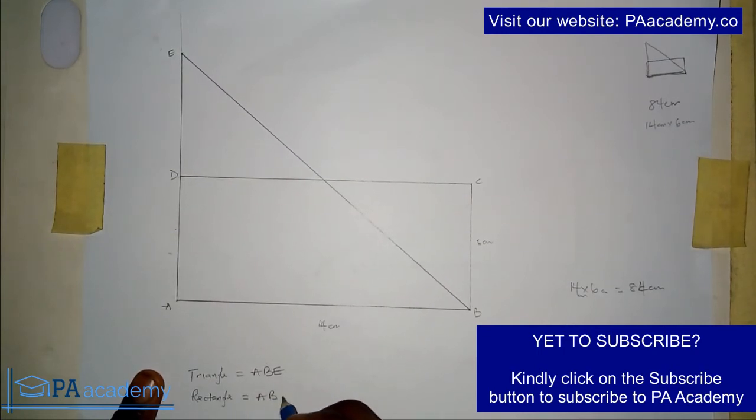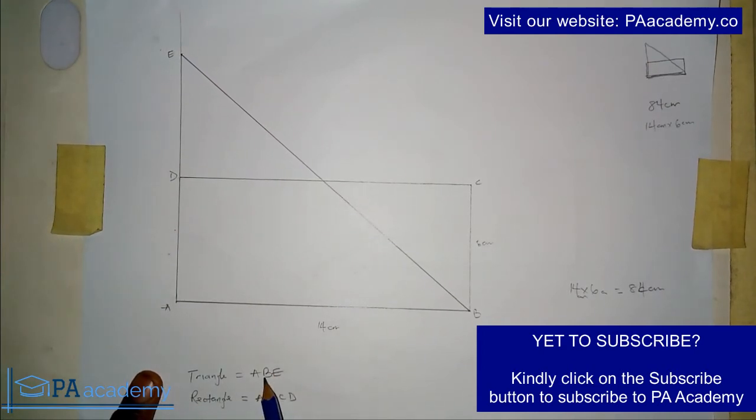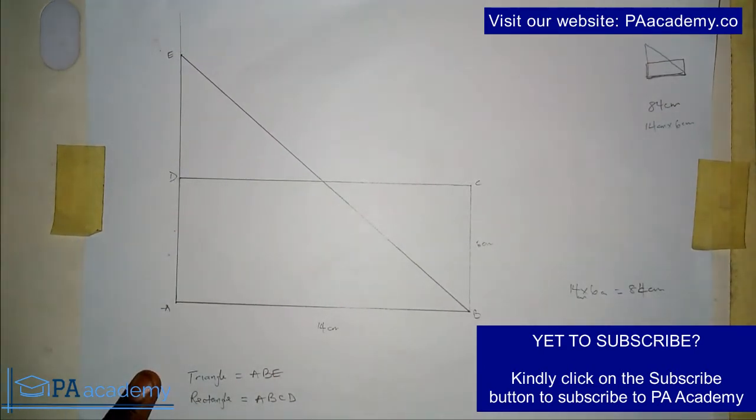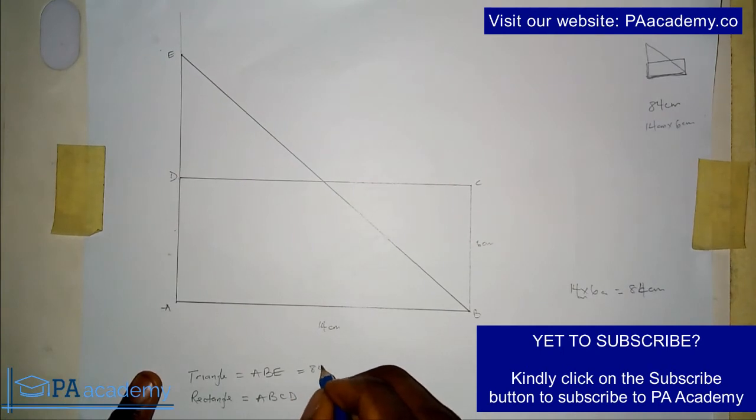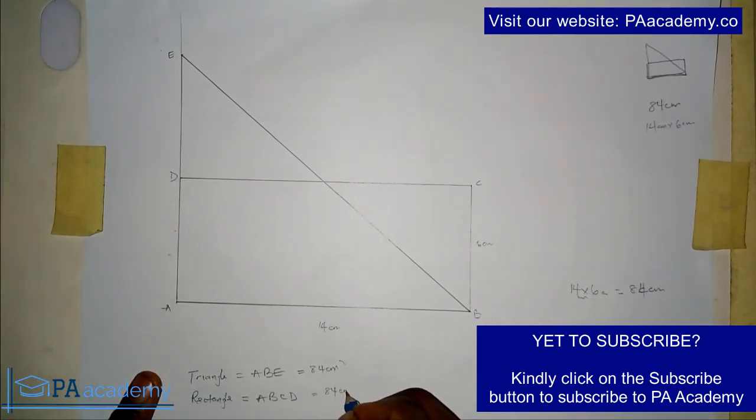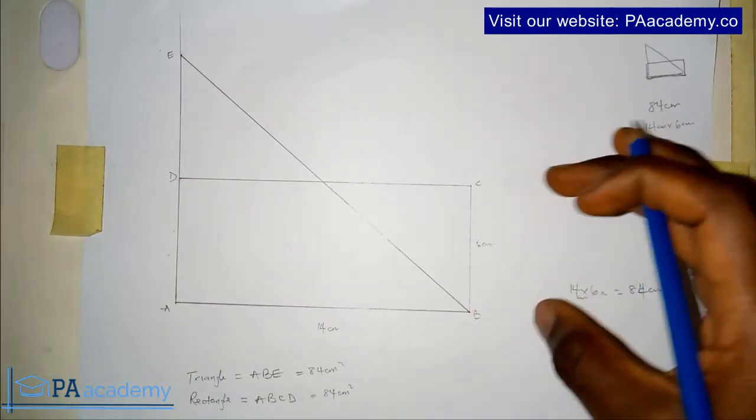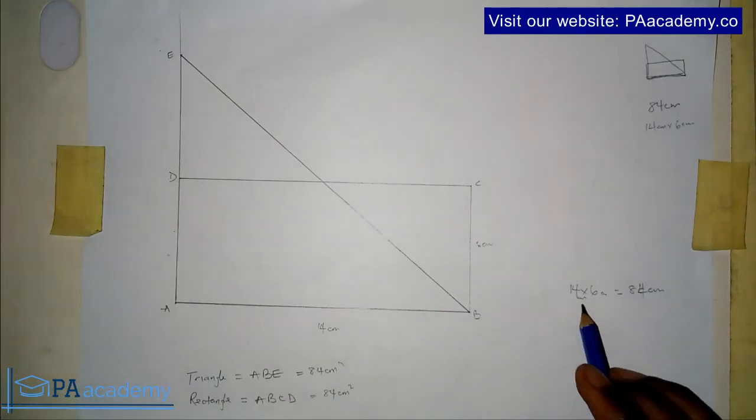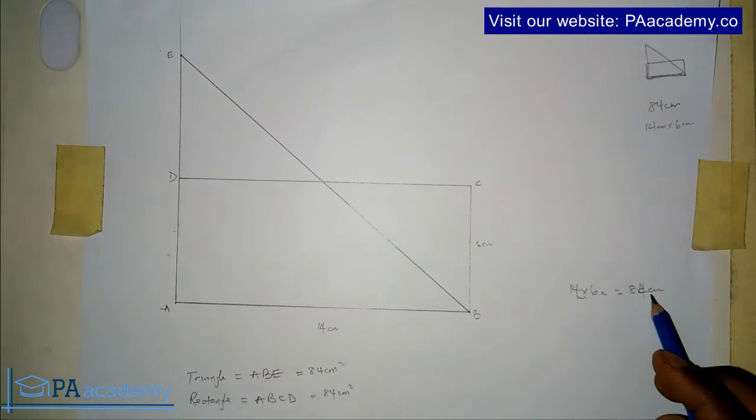From this diagram, this is the triangle ABE, while the rectangle is ABCD. Now these two are having the same area of 84 centimeters square.